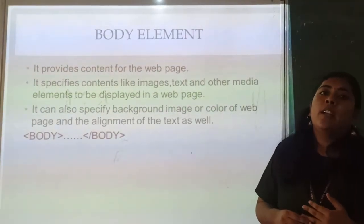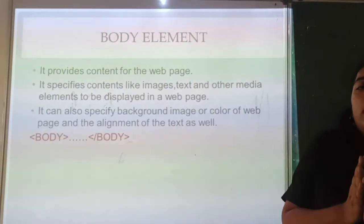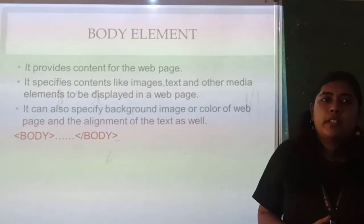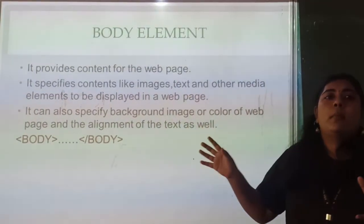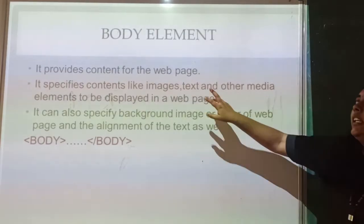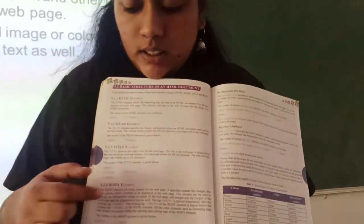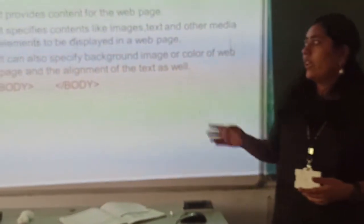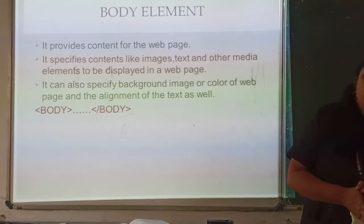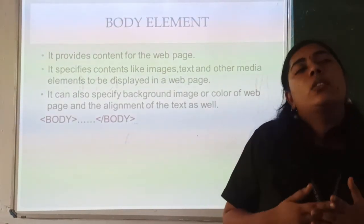Now we have the body element. The body tag is used for the main contents of the webpage. It is a container element with open and close tags. It provides the contents for the web page — for example, you can see a heading and a description. The body element specifies contents like images, text, or any other multimedia such as videos. You can also specify background image, color, etc.